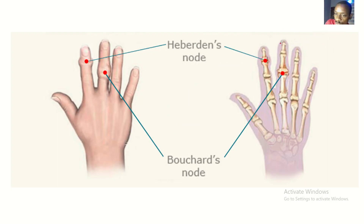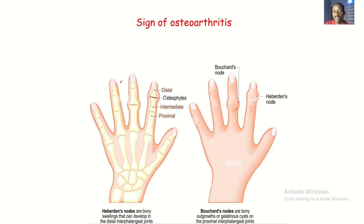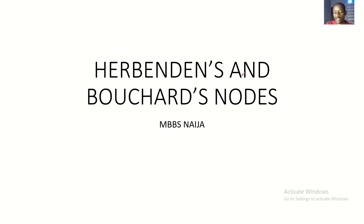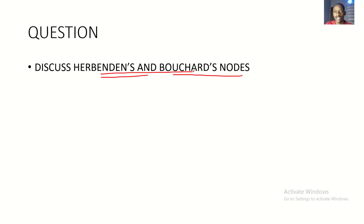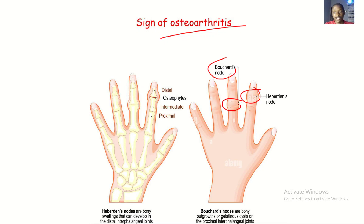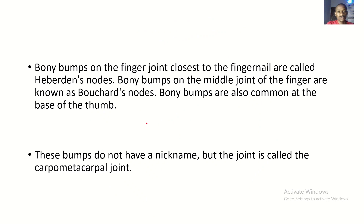Today we're talking about two nodes that might show up if you have osteoarthritis: the Heberden's nodes and the Bouchard's nodes. These nodes occur on the finger when you have osteoarthritis. The Heberden's nodes tend to be upper, meaning they're at the distal phalanx, while the Bouchard's nodes tend to be lower, meaning they're at the middle phalanx. Basically, these are bony bumps on the finger joints.